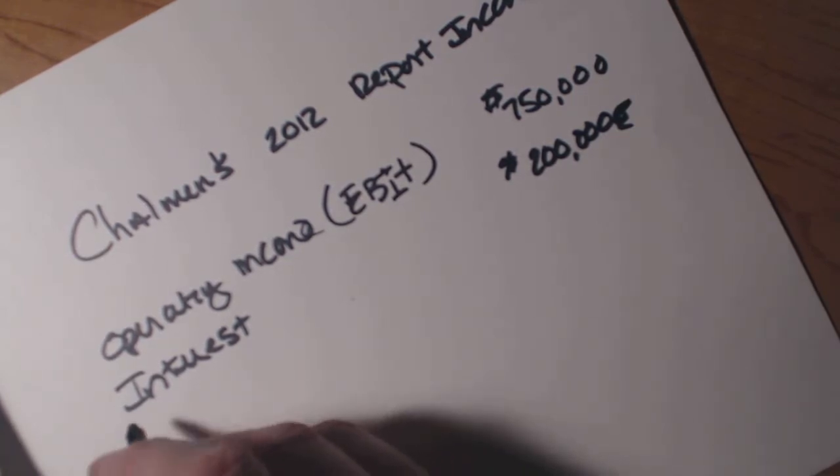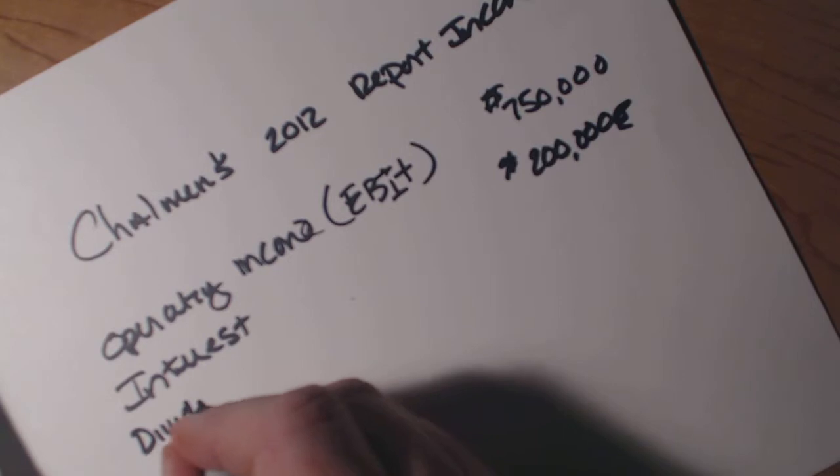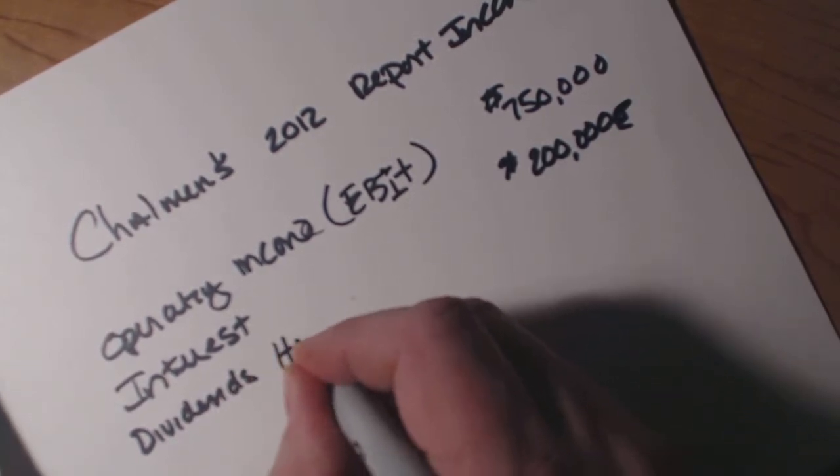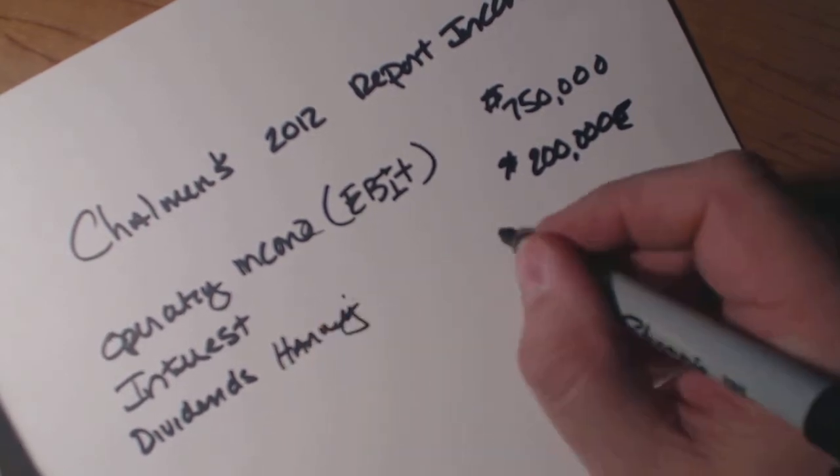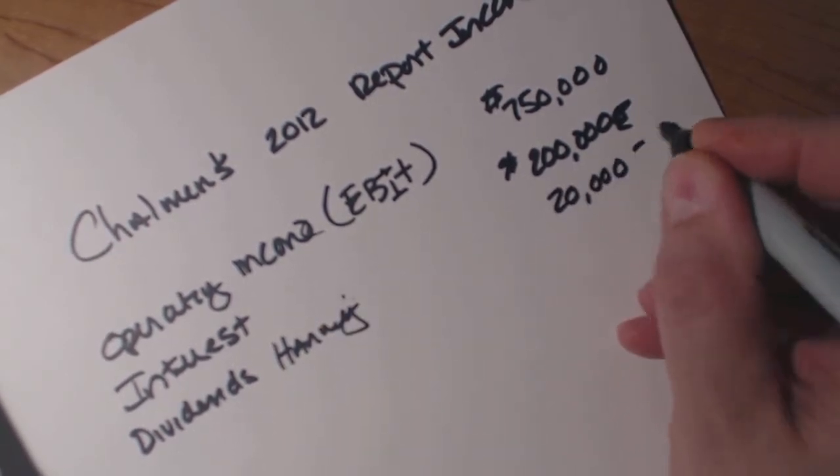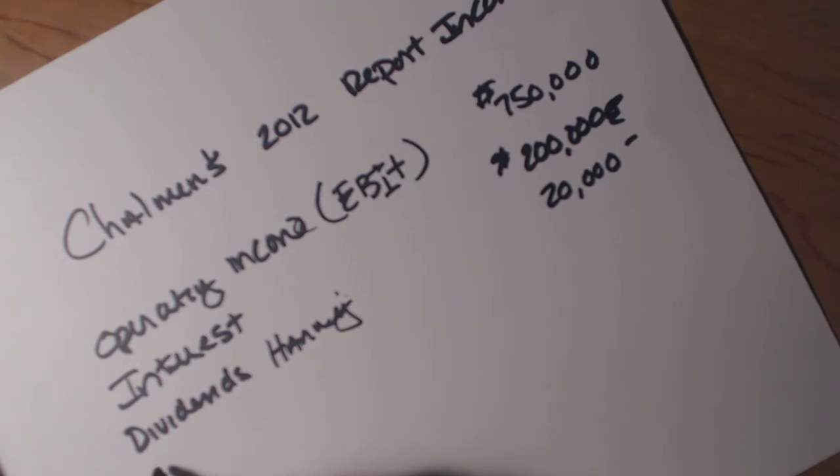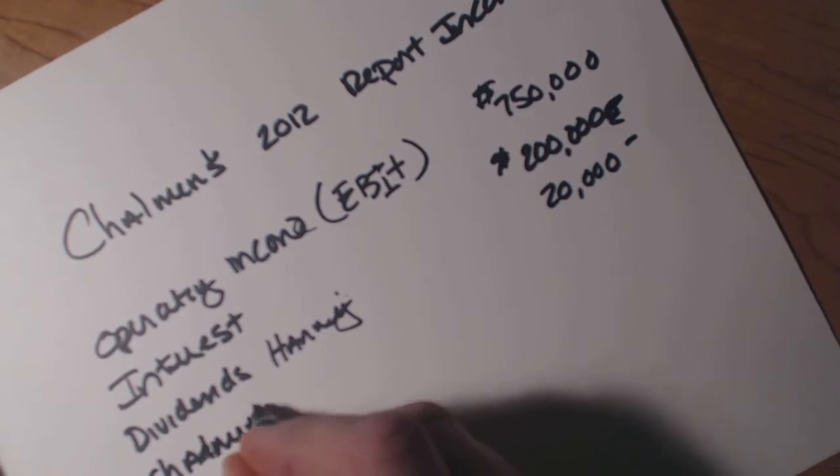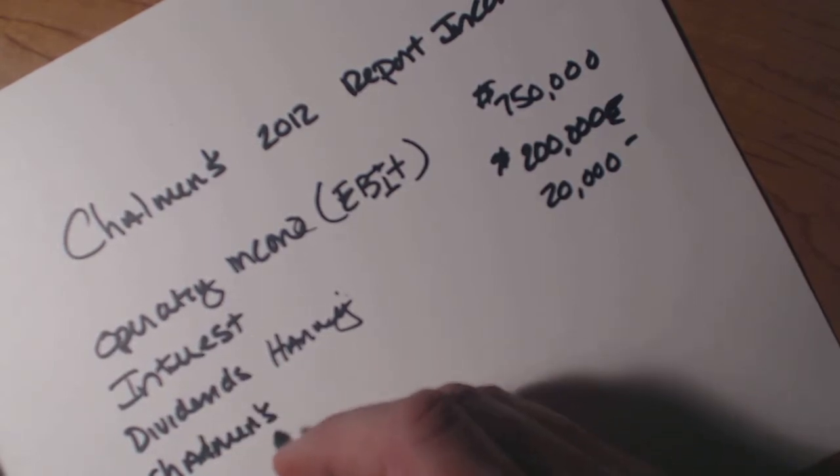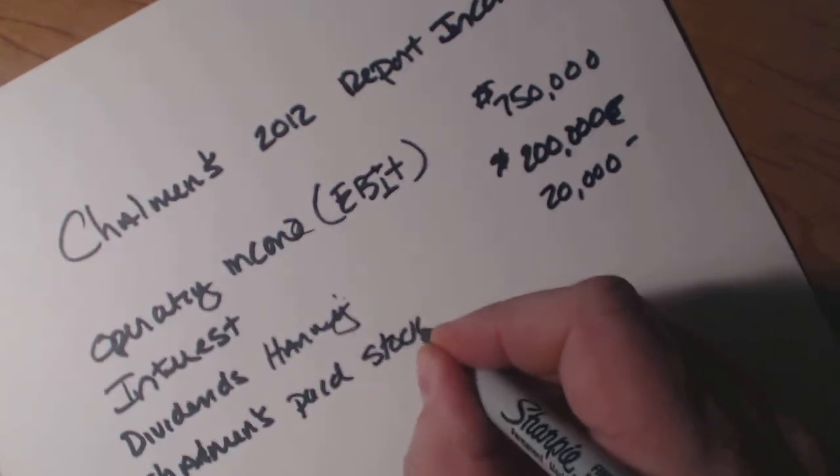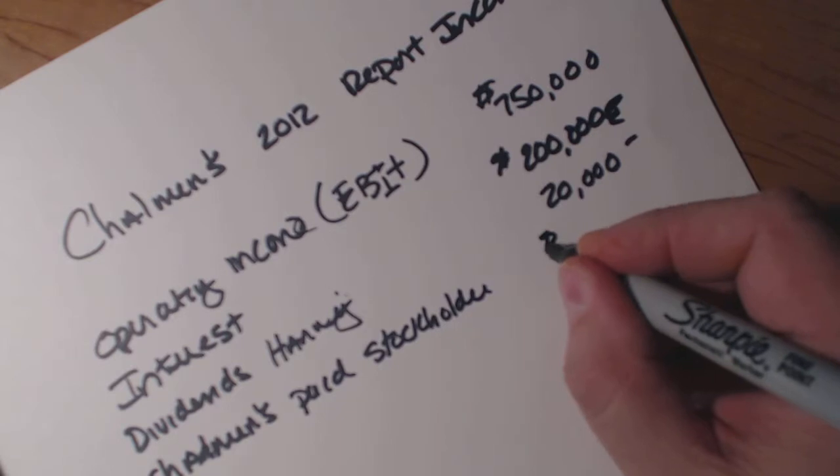Well, they also own this company called Harvey. And now Harvey pays out something called dividends. And so Harvey paid out $20,000 in dividends. Now, Chalmers is going to pay out a dividend to their stockholders of $100,000.